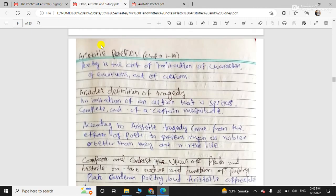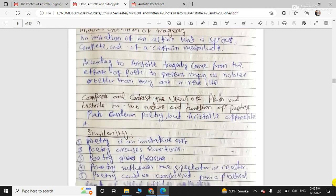So, Aristotle's Poetics detailed analysis. So, he defined poetry is the art of imitation of character, emotion and actions. We have seen this. His definition of tragedy, how does he define it? He defines tragedy this way: it is imitation of an action that is serious, complete and of certain magnitude. So, according to him, tragedy came from the efforts of the poet to present men as nobler or better than they are in real life.